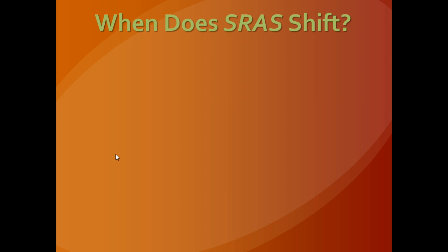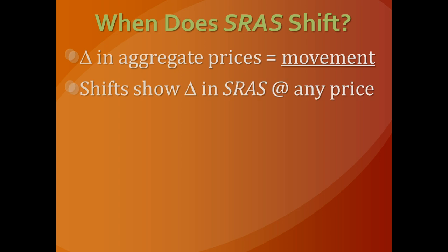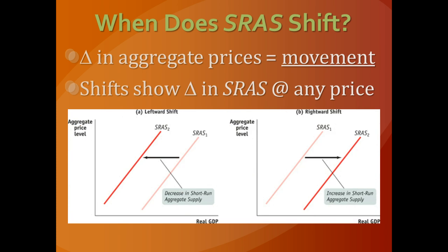So when does short run aggregate supply shift? Just like with aggregate demand, if there's a change in the price level then there's a movement along the aggregate supply curve, because equilibrium changes when one of the two curves shifts, causing the equilibrium point to move along the other curve. If price levels change from an aggregate supply perspective, that indicates aggregate demand caused the change. If there's any other change that concerns profit motive, then we would see an actual shift in the aggregate supply curve.